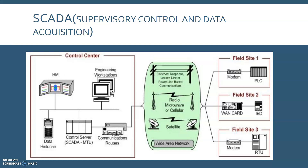SCADA communication topologies may vary among implementations. The various topologies used include point-to-point, series, star, and multi-drop. Point-to-point is functionally the simplest type; however, it is expensive because an individual channel is needed for each connection. In a series configuration, the number of channels used is reduced, but channel sharing has an impact on efficiency and complexity of SCADA operations.